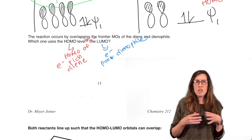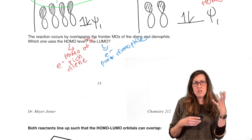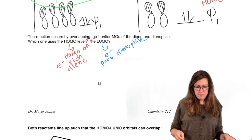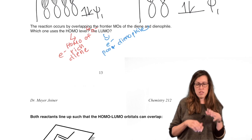So we take the HOMO of the electron-rich diene and the LUMO of the electron-poor dienophile. That's the electrostatic attraction. At the frontier orbital level, we're going to have filled orbitals overlap with empty orbitals before that bond occurs.